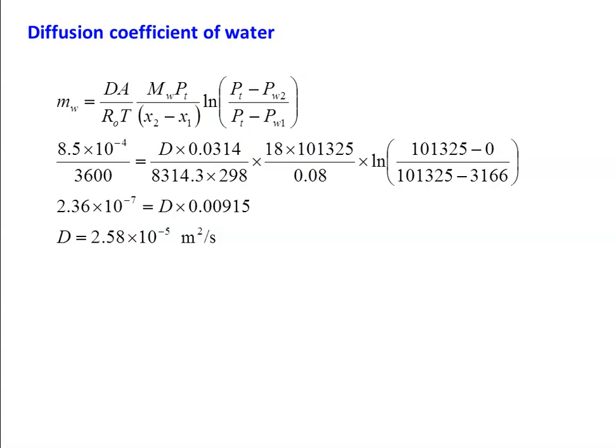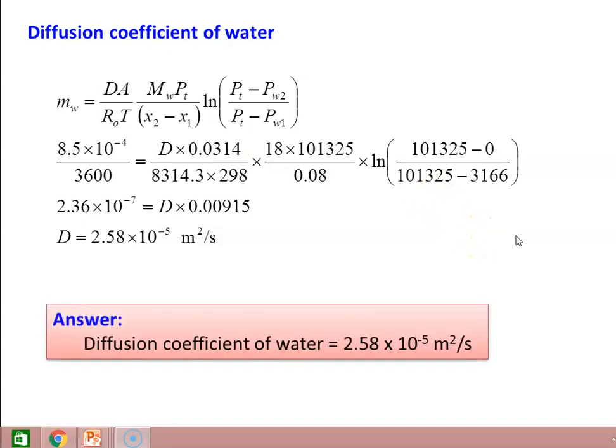Substituting all other parameters: area equal to 0.0314, R0 equal to 8314.3, temperature equal to 298, molecular weight is 18, total pressure is 101325, distance is 0.08, and substituting the partial pressures. Calculating: left hand side is 2.36 into 10 power minus 7, and right hand side is D into 0.00915. The diffusion coefficient is 2.58 into 10 power minus 5 meter square per second for water.